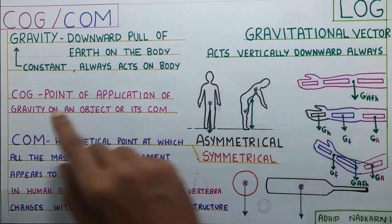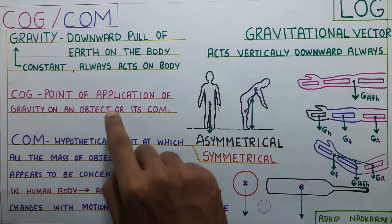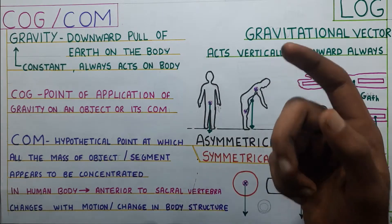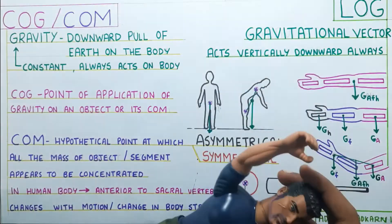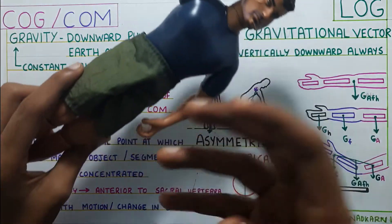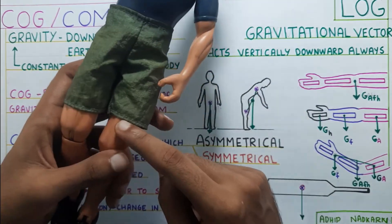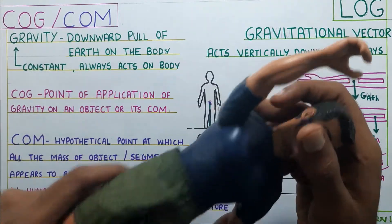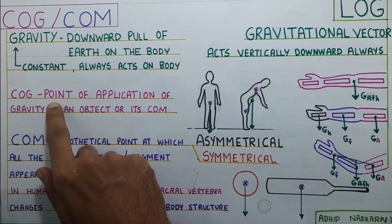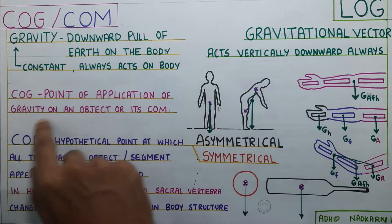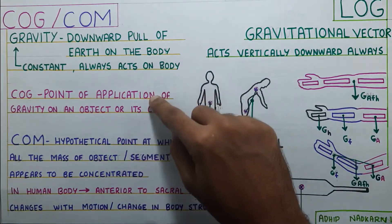Center of gravity — what is this? It is a point of application of gravity on an object, or its center of mass. If you take Joe and he is falling down, where is the gravity acting on him? Is it on his head, his trunk, his legs or foot? It is on the center of mass. So it is a point of application of gravity on an object — that is Joe — or its center of mass.